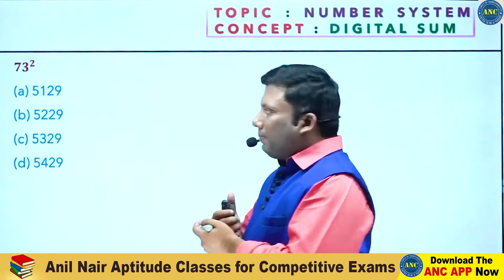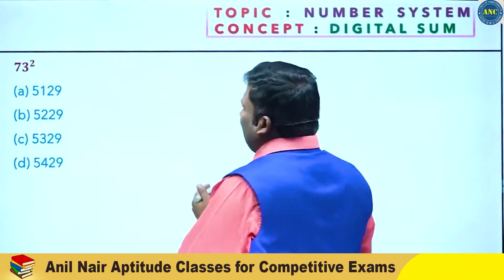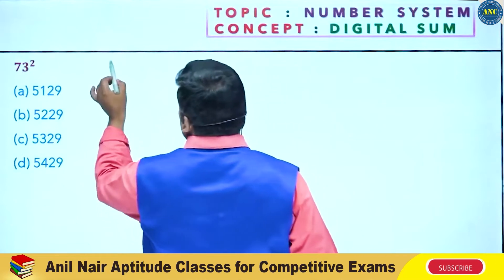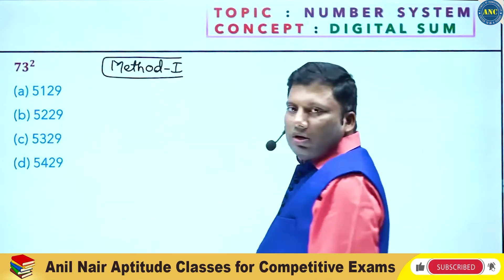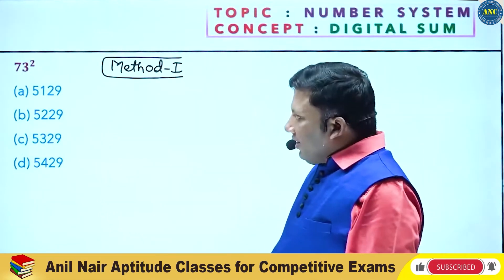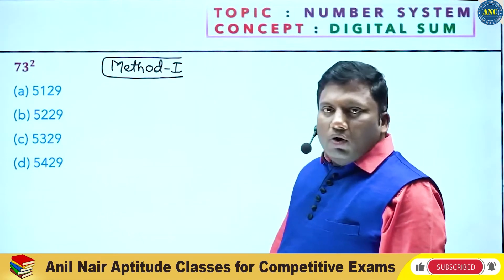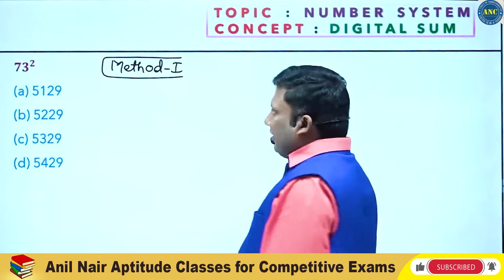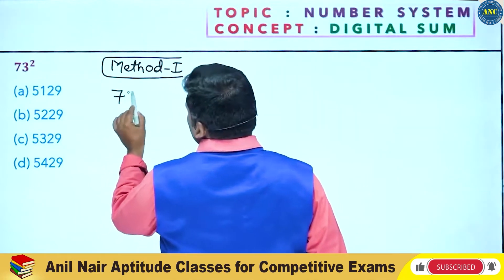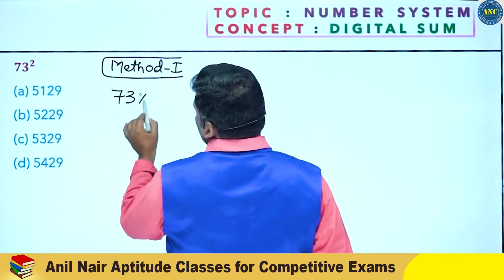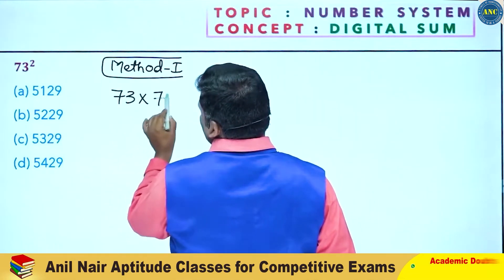Everybody kindly reply. 73 square, Method 1. 73 whole square is 73 into 73.